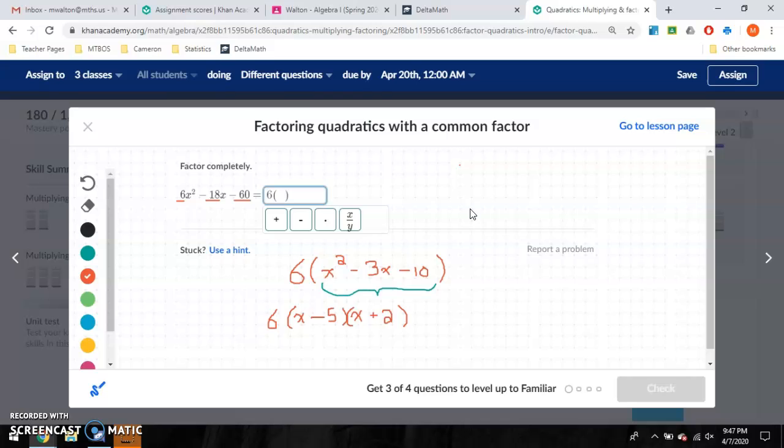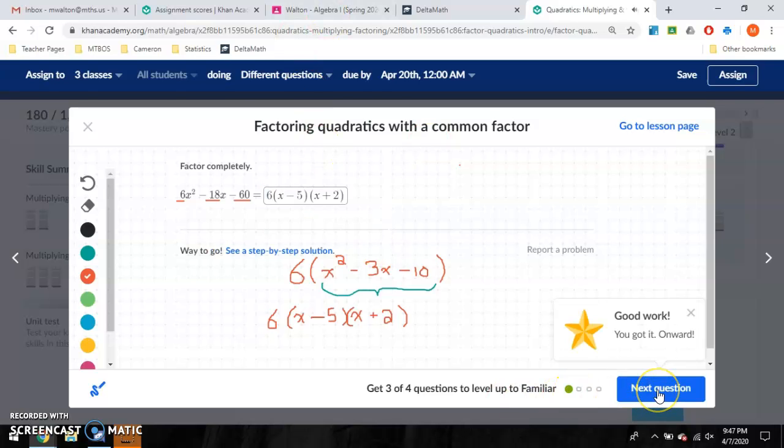I have 6, x minus 5, and x plus 2. And let's go ahead and check that answer. All right. Looks good.